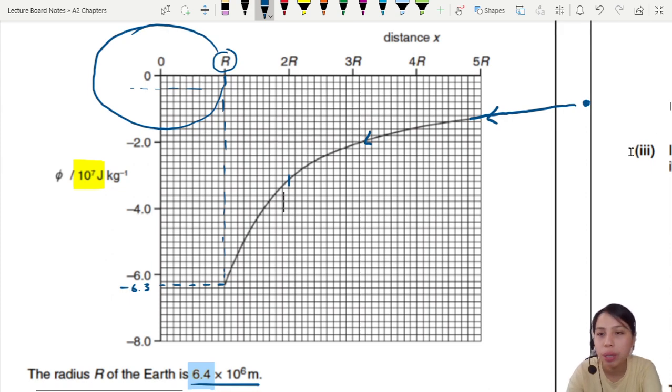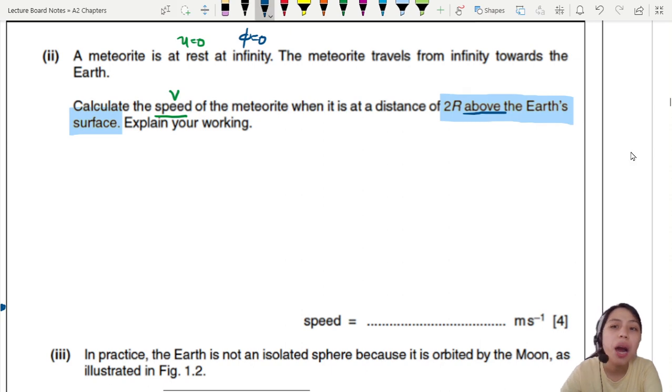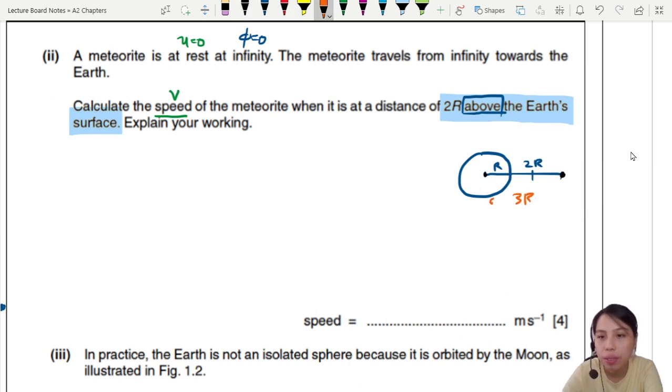Wait, wait, wait, wait, wait. Reread the question a bit. Where will the meteorite stop? 2R above the Earth's surface. Above the Earth's surface. This means if your Earth is here, your Earth already has R. 2R above R means like this. Here to here is 2R. So in total distance from center of planet to your meteorite, that will be 3R distance.